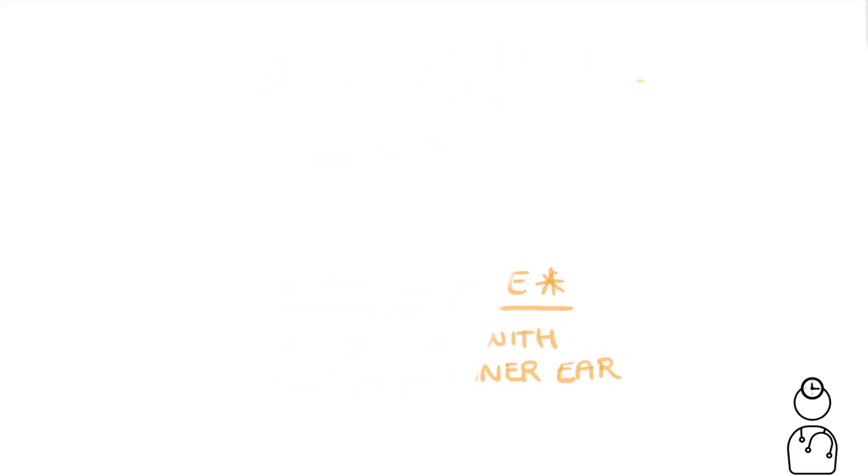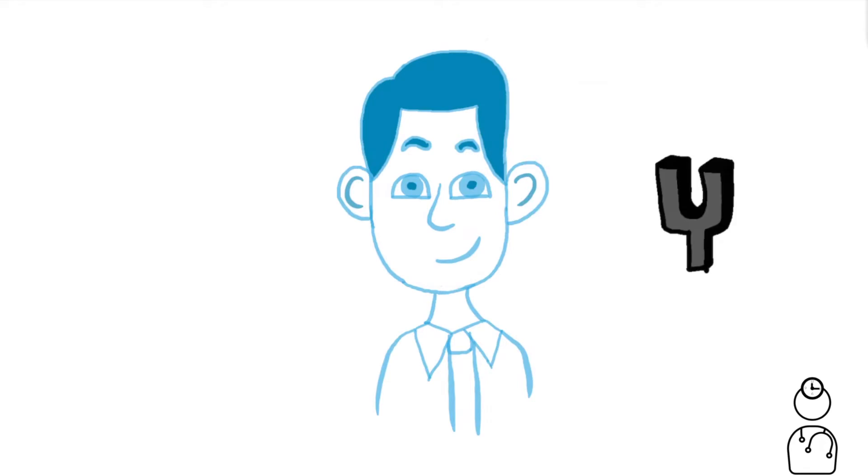We can use two tuning fork tests called Weber's and Rinne's tests in order to figure out what's going on. First up we'll need a 512 hertz tuning fork and we're going to start with Weber's test, but it doesn't really matter which one you start with.